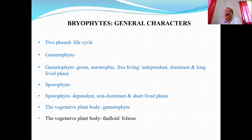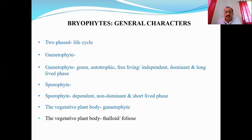This plant body, which is a gametophyte, may be thaloid — as in lower cryptogames like algae and fungi — or in some advanced bryophytes, the plant body may be foliose. In primitive bryophytes, the plant body is thaloid: undifferentiated without roots, stem, and leaves. In advanced bryophytes, it is slightly differentiated into root-like, stem-like, and leaf-like structures. The word 'like' is used because true roots, stem, and leaves are always absent in bryophytes, whether advanced or primitive.